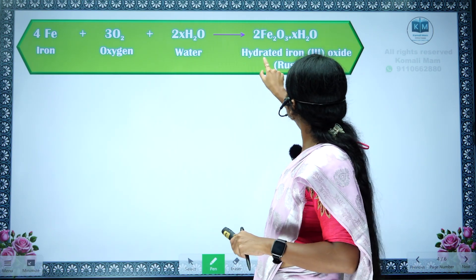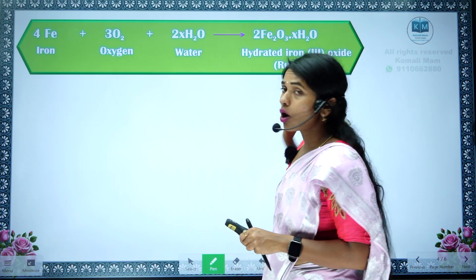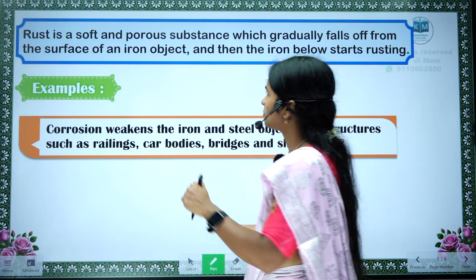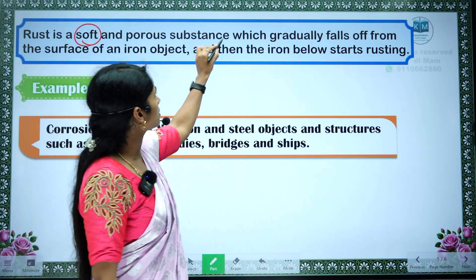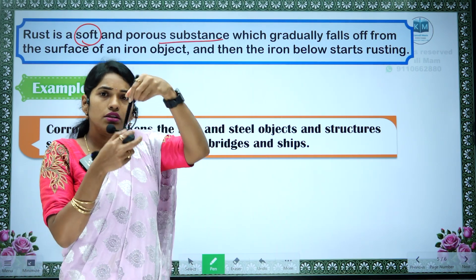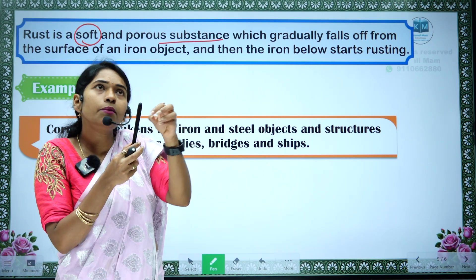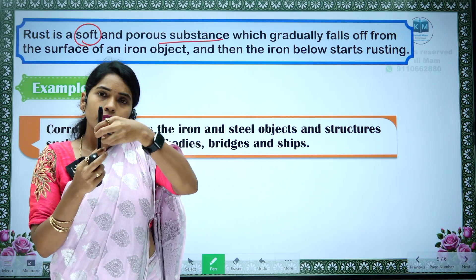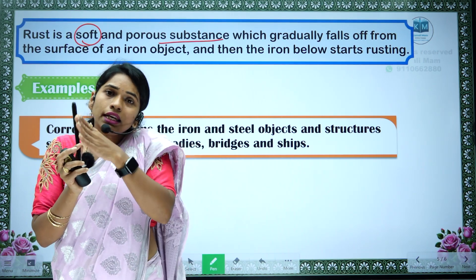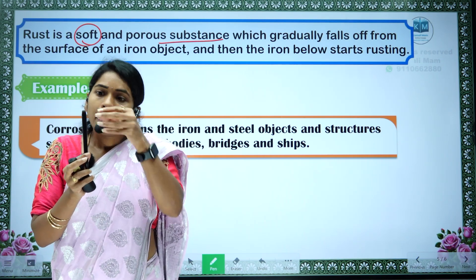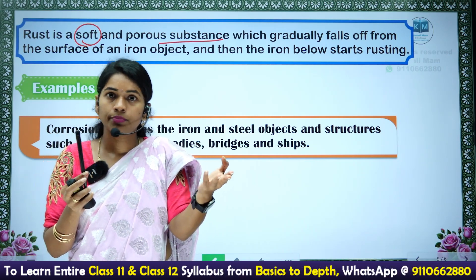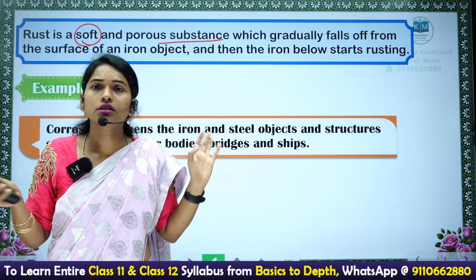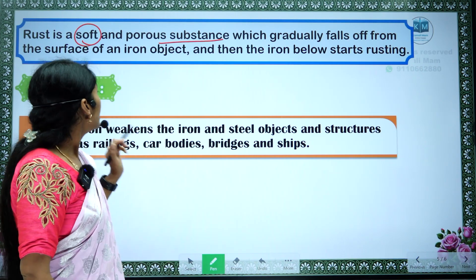Fe2O3·xH2O is hydrated iron(III) oxide — we call it rust. This rust is a soft and porous substance. Once this rust forms on the iron object, slowly after some days it falls down. Once the rust falls down, the inner iron comes in contact with air again and undergoes oxidation and corrosion again. Like this, the total iron object loses its property and so much damage will happen — that is why we do painting.